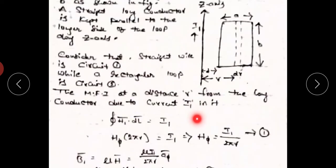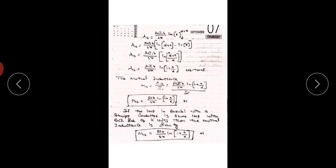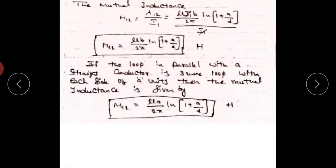If the loop parallel to the straight conductor is a square loop with each side equal to A units, then we replace B with A in the expression. The mutual inductance between the straight conductor and the square current loop is M₁₂ = μA / 2π · ln(1 + a/d) henries.